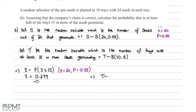T is binomially distributed with 10 trials and probability 0.299. We're asked for at least half of the trays, meaning at least 5, so we work out the probability that T is greater than or equal to 5 with N equal to 10 and probability 0.299. Using the binomial calculator or table, this comes out to 0.149 to three significant figures — so the probability that in at least half of the trays 15 or more seeds germinate is 0.149.